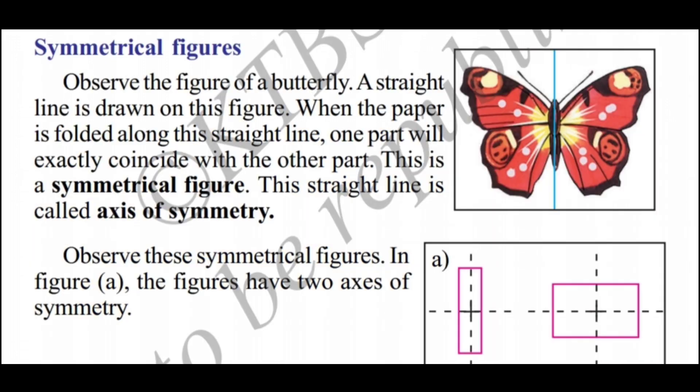Observe the figure of a butterfly. A straight line is drawn on this figure. When the paper is folded along this straight line, one part will exactly coincide with the other part. This is a symmetrical figure. This straight line is called the axis of symmetry.